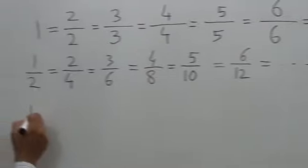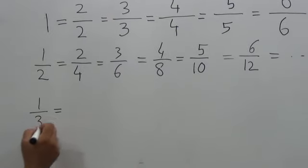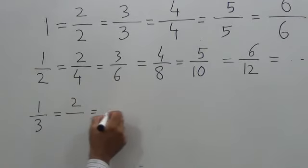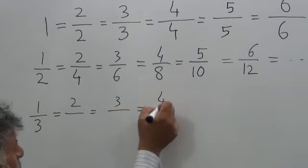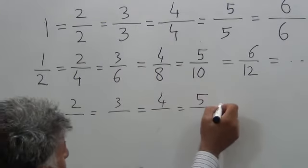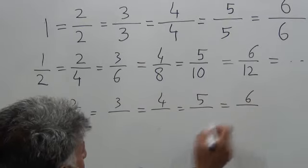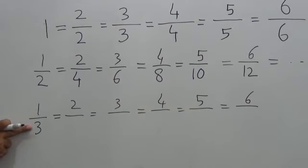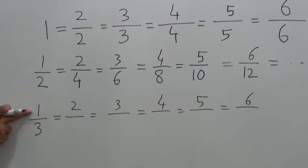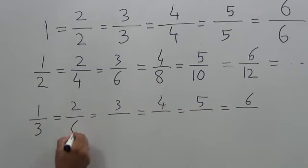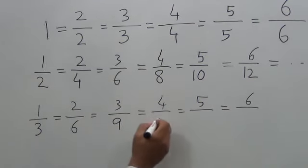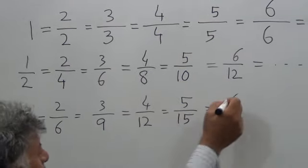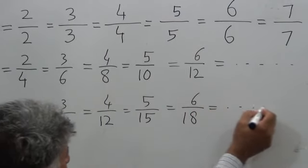Similarly, if I have equivalence of thirds. So if I have one, two, three, four, five, six, in the denominator, the relationship between the numerator and denominator is one is to three. So three ones are three, three twos are six, three threes are nine, three fours are twelve, three fives are fifteen, three sixes are eighteen. And this way we can continue.